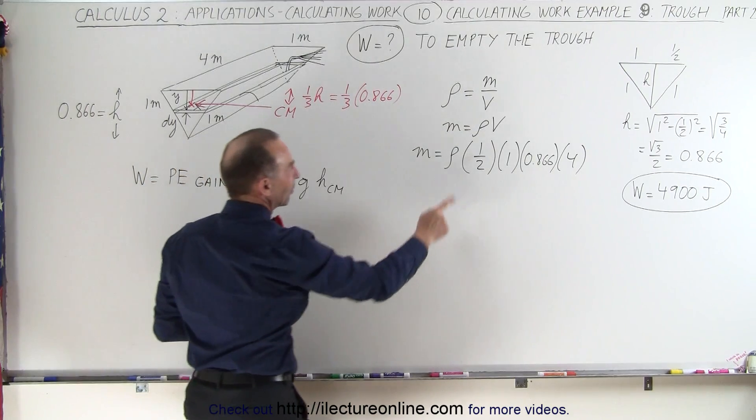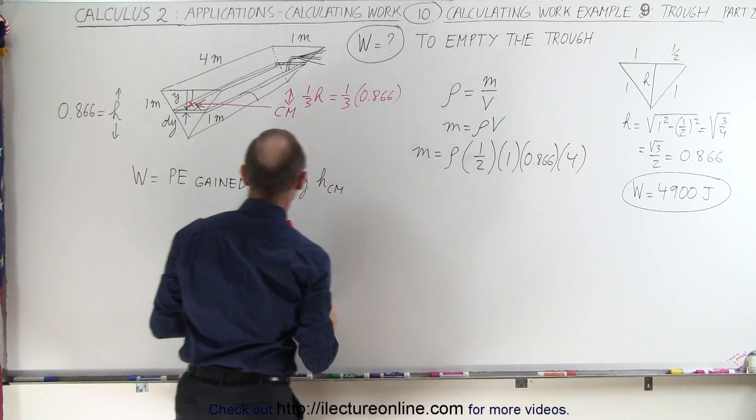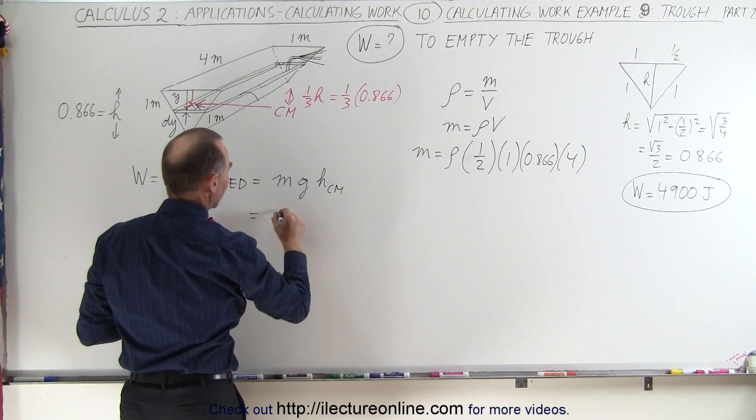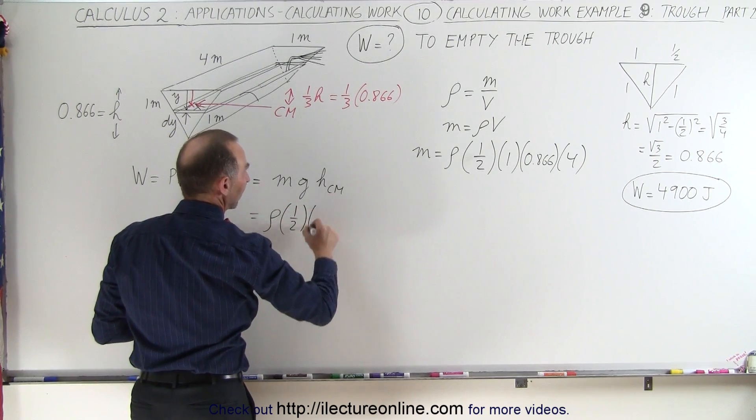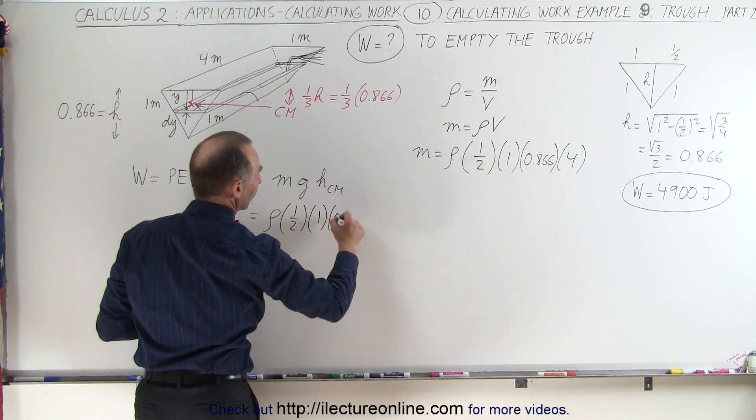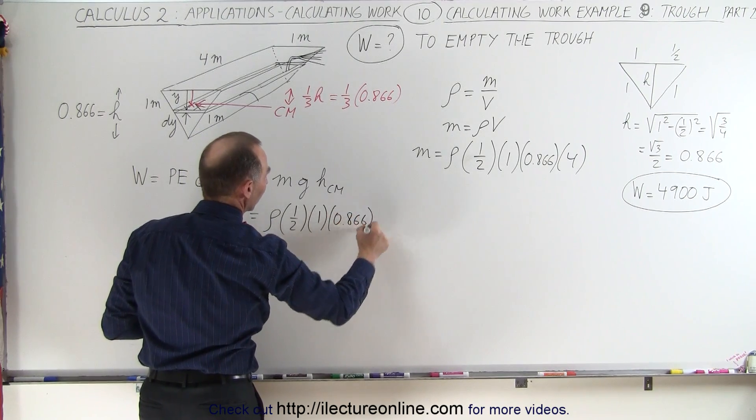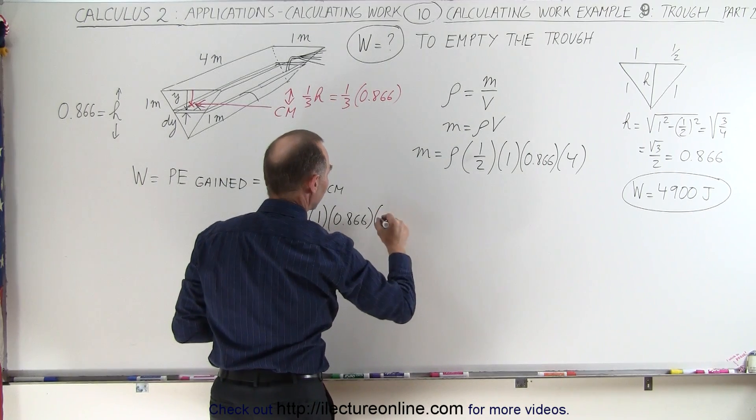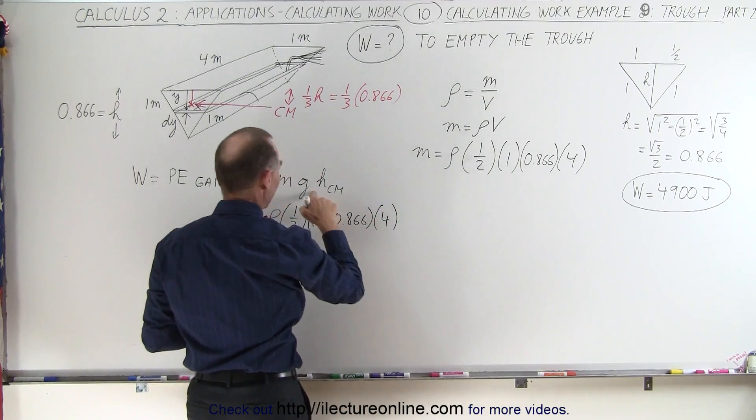So that multiplied times the density gives us the mass of the trough, which can go in here. So this becomes the density times one-half times one, times 0.866, so it would be half the base times the height, times the length of the trough, 4.